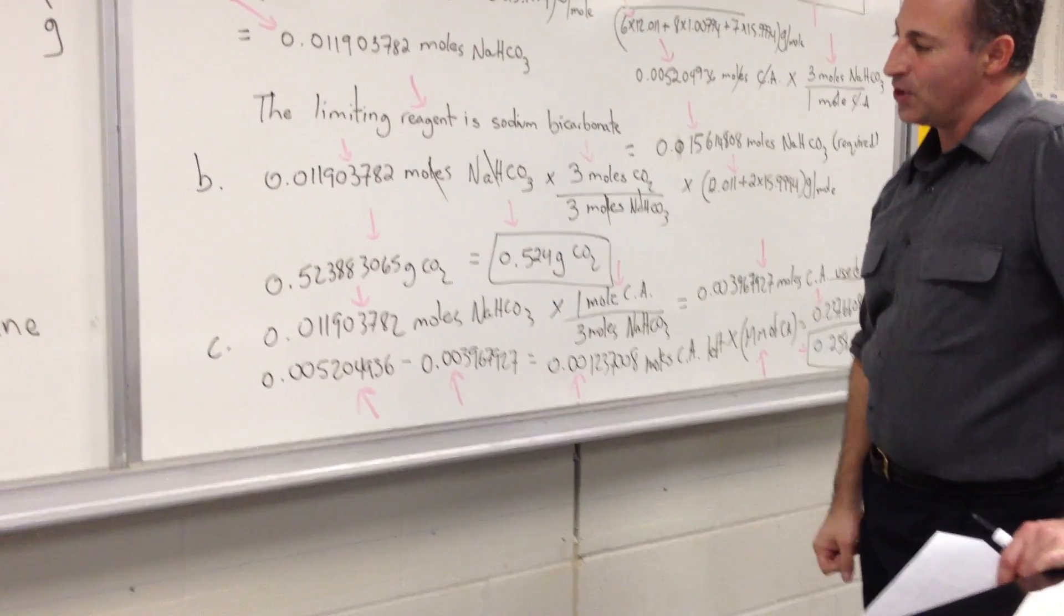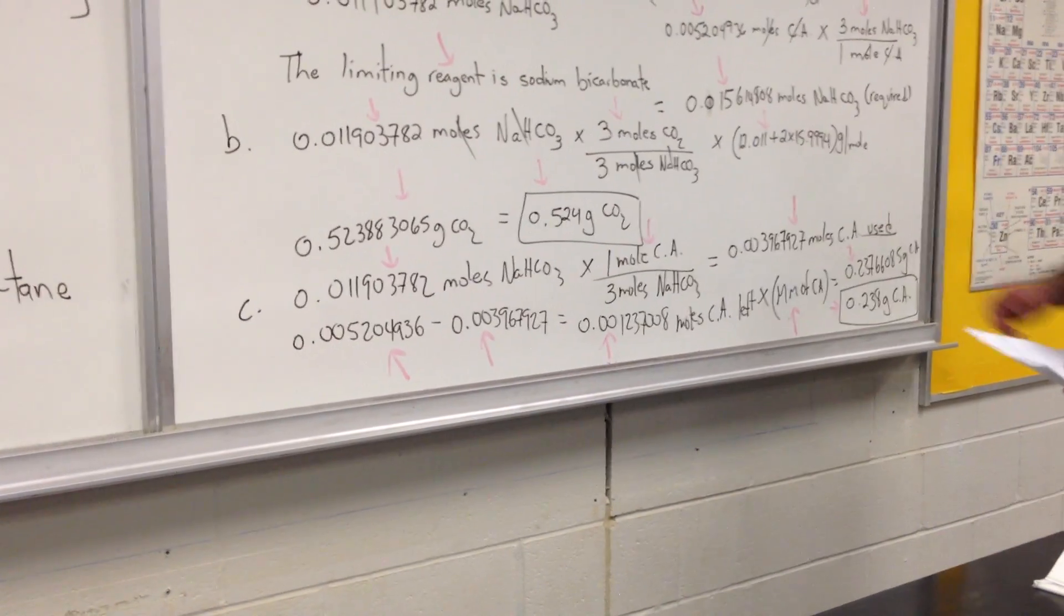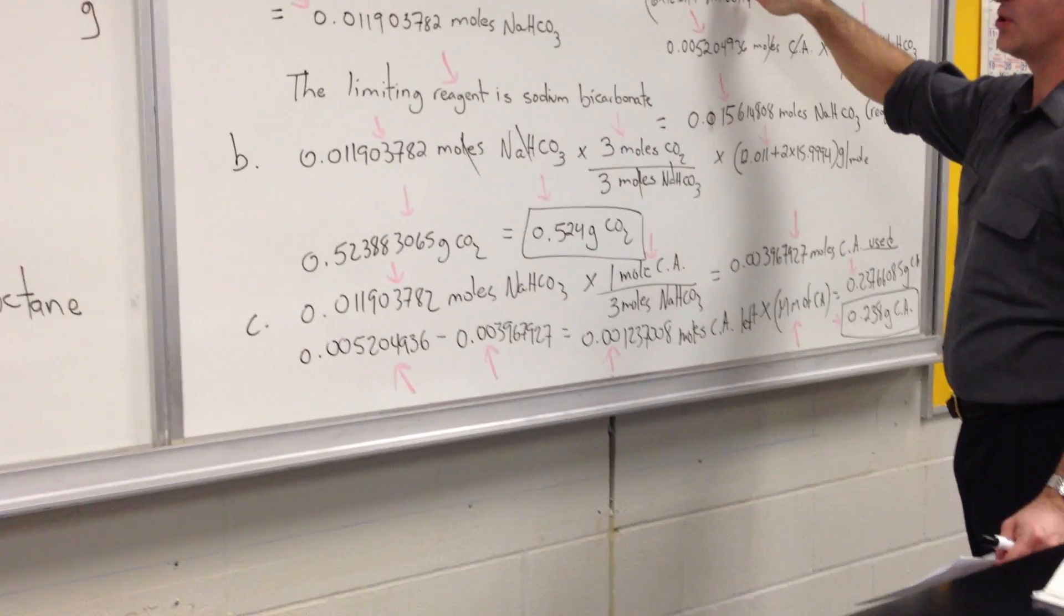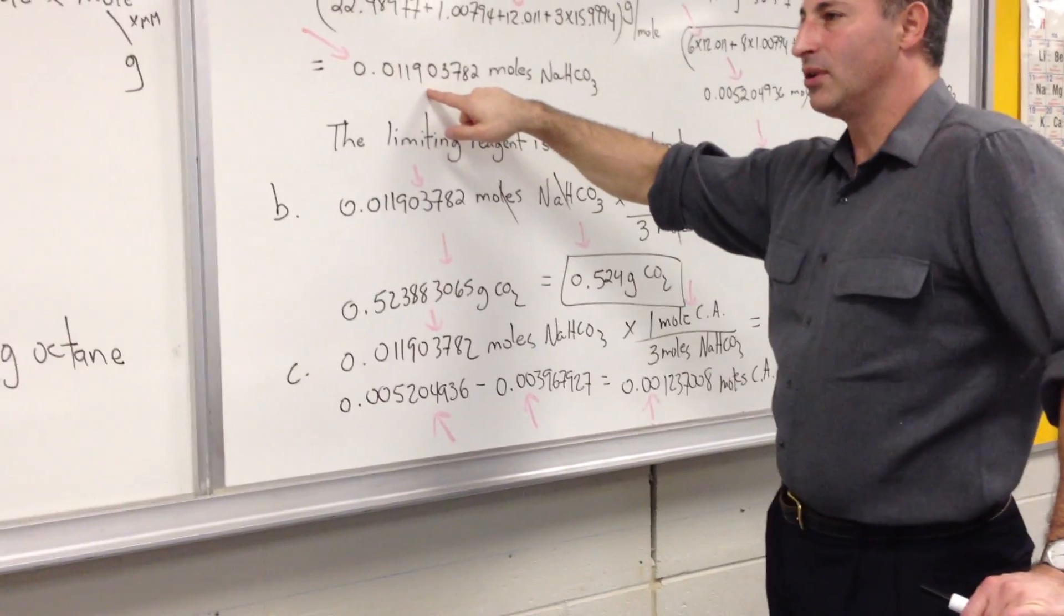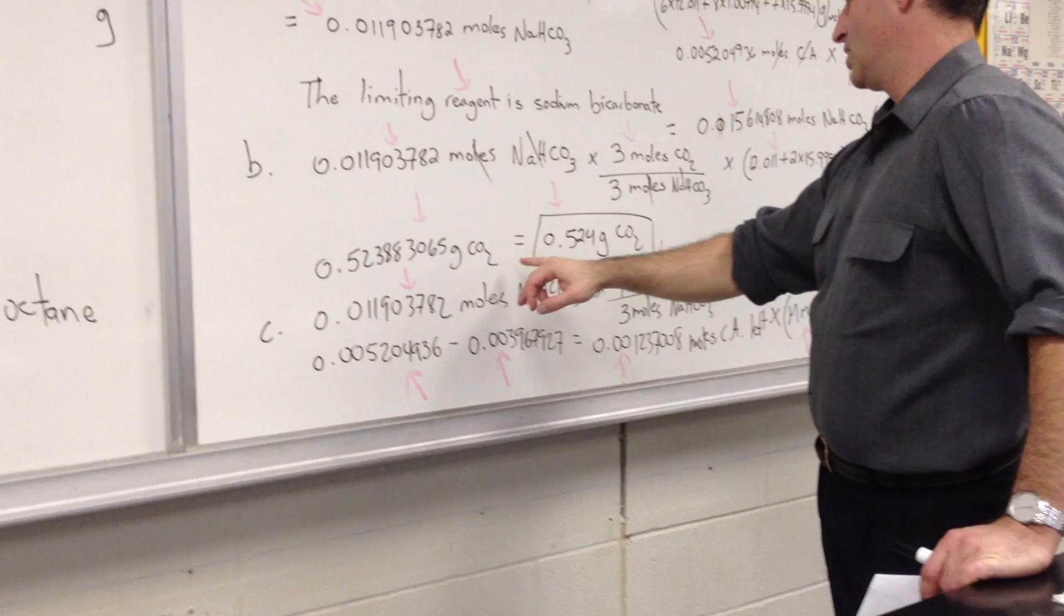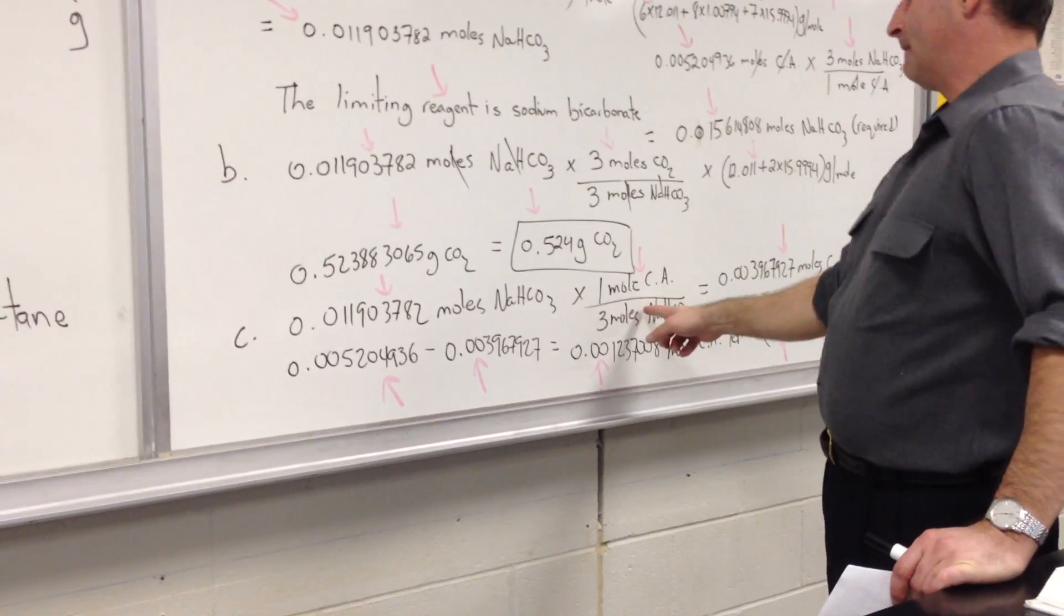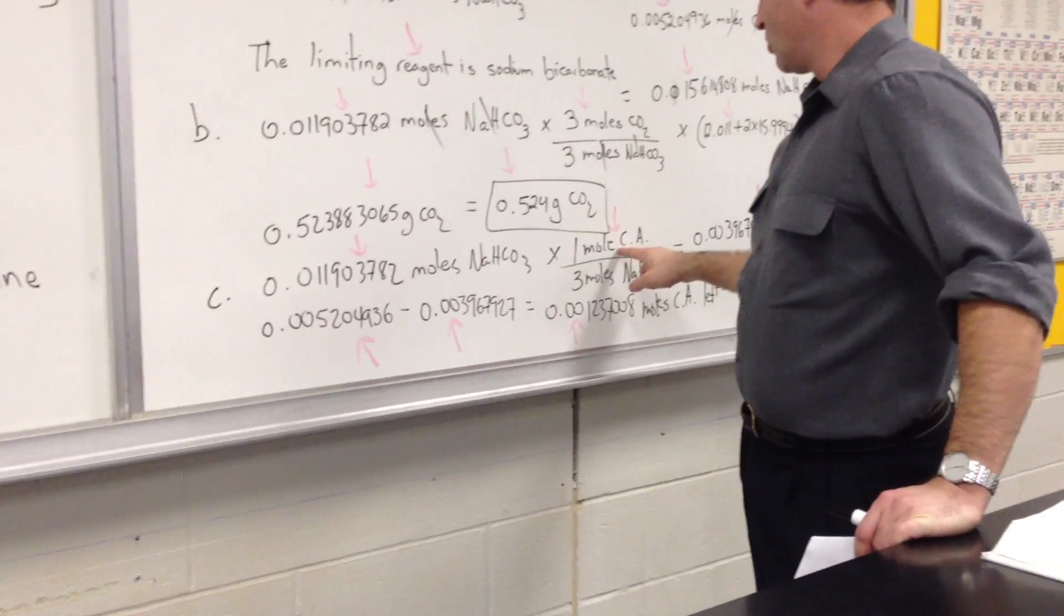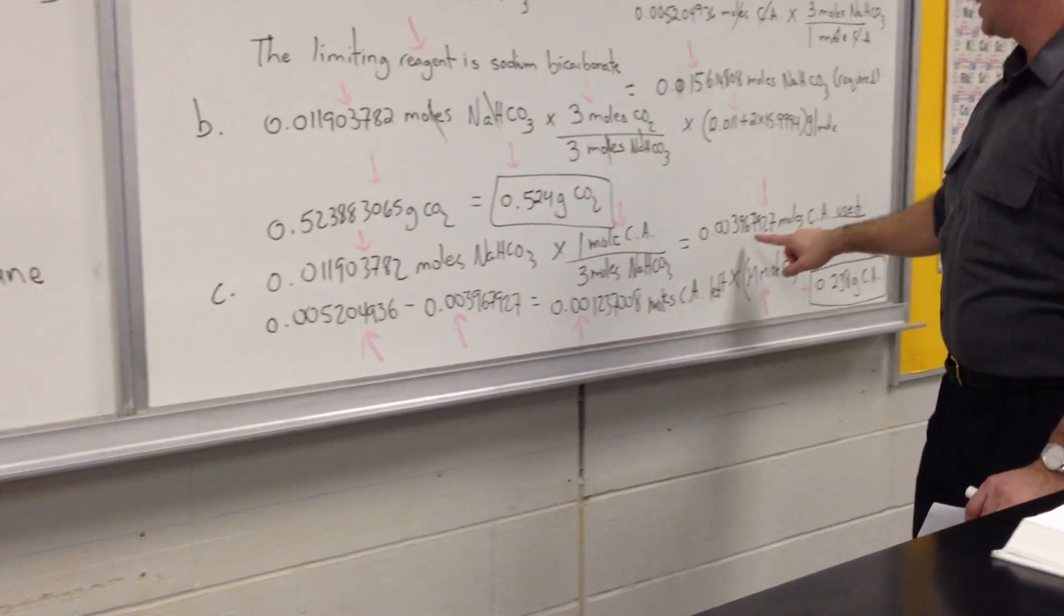In the last step, you're asked how many grams of excess reactant. This is the excess reactant. So how much of this is left over? How do we find that out? Well, we have to do our calculation, again, starting from this number, factoring in the stoichiometry, which is here. We start off with this number. Factoring in the stoichiometry, one mole of citric acid is used for every three moles of sodium bicarbonate, and we find out that many moles of citric acid is used.